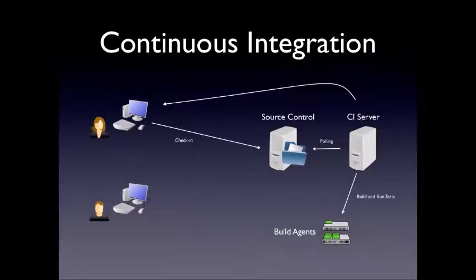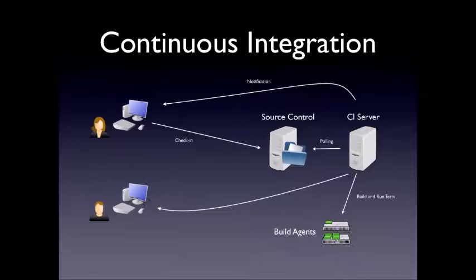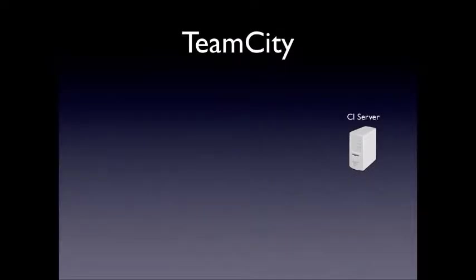This prevents other people from checking out code that has potentially broken the build. If something is broken, since all developers on a team are usually notified of the build status, they know they shouldn't be checking out the code until they get a successful build. Notification can occur using different mechanisms such as email, a tray icon, or toast notifications.